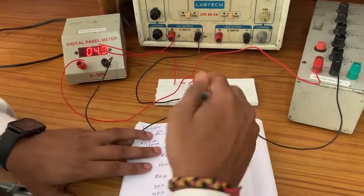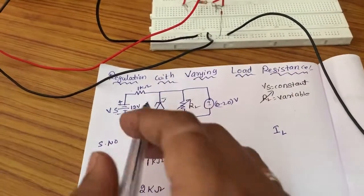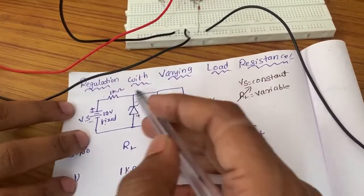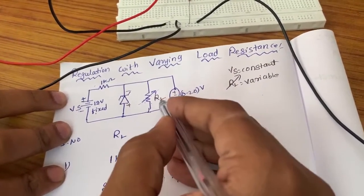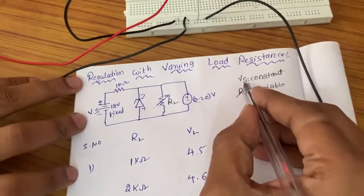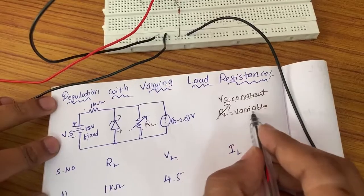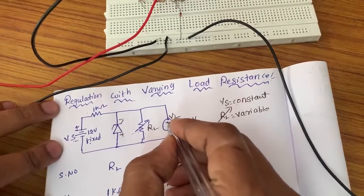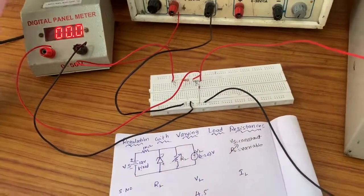Now let's see the load regulation. This is the load regulation diagram. In line regulation we increased the supply voltage continuously by keeping load resistance constant. But in load regulation — regulation with varying the load resistance — we will keep the supply voltage constant and vary the load resistance continuously to see whether the output voltage is constant or not. The connections are the same as line regulation, but here the input voltage is fixed.